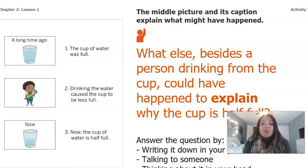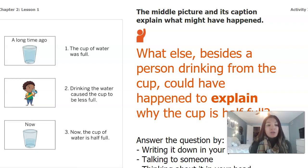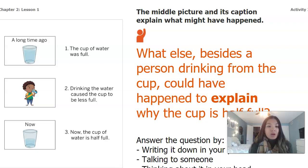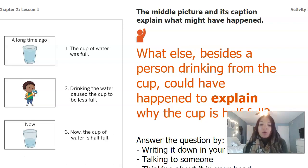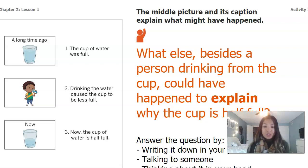The middle picture and its caption explain what might have happened. In the middle we now see someone with a glass of water drinking it. The middle event says: drinking the water causes the cup to be less full. What else besides a person drinking from the cup could have happened to explain why the cup is half full? Pause the video and answer by writing in your packet, talking to somebody at home, or thinking about it in your head.